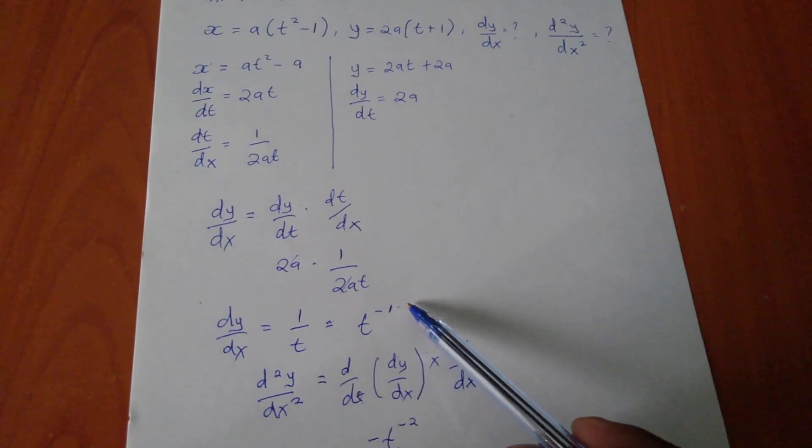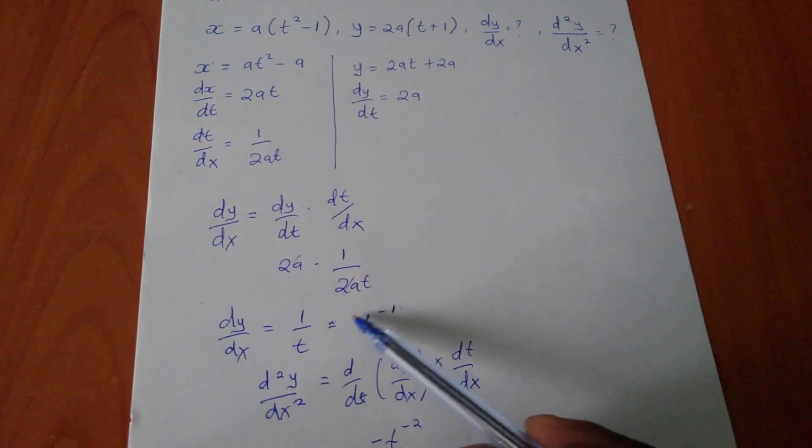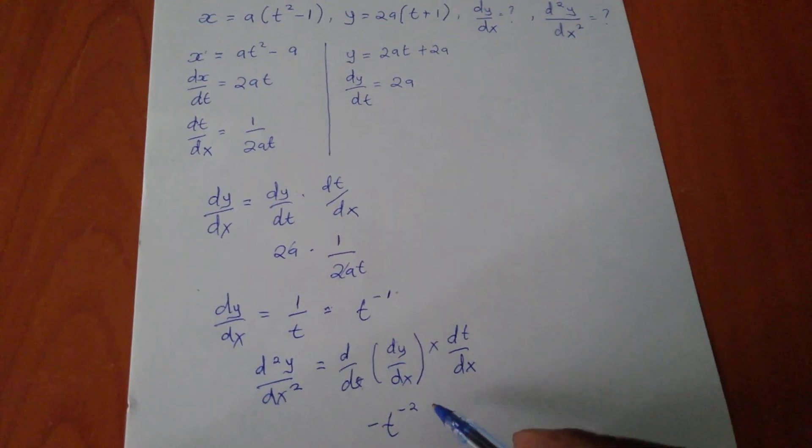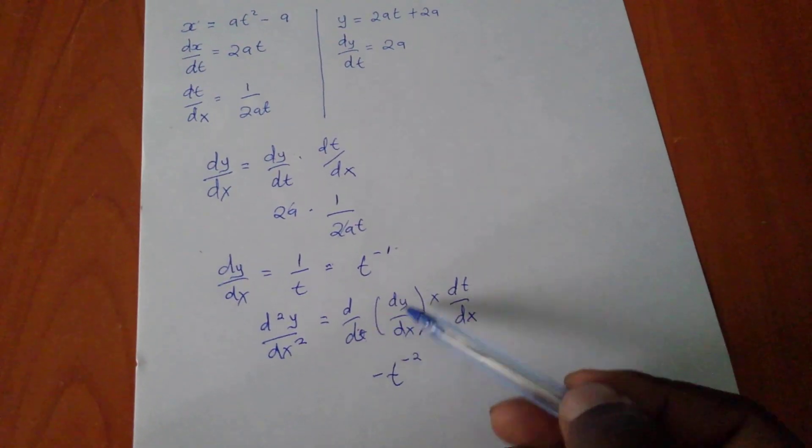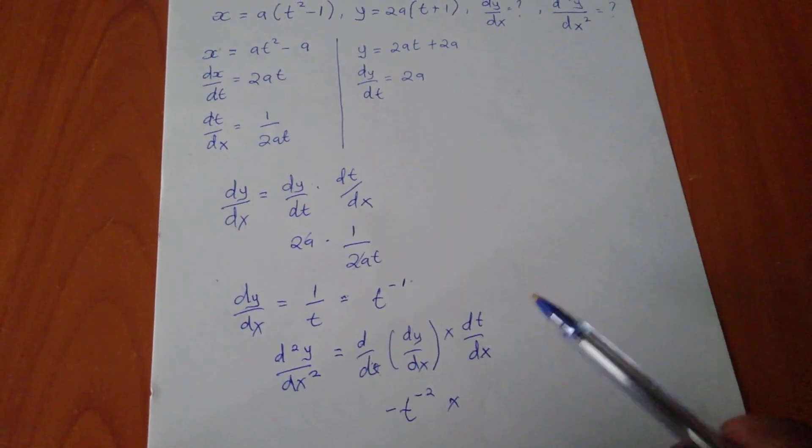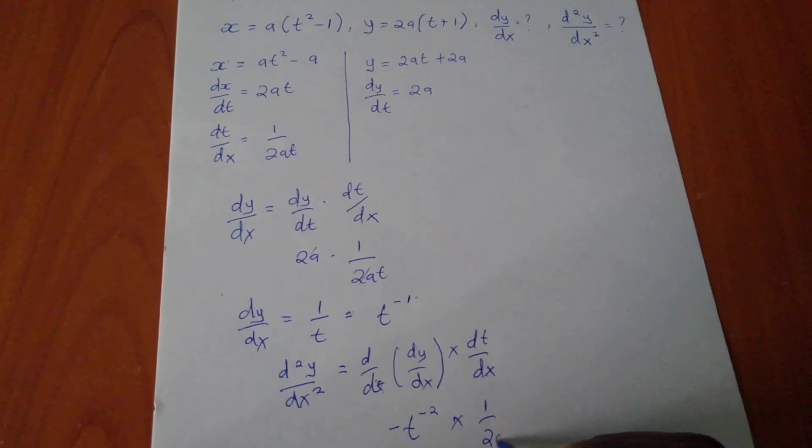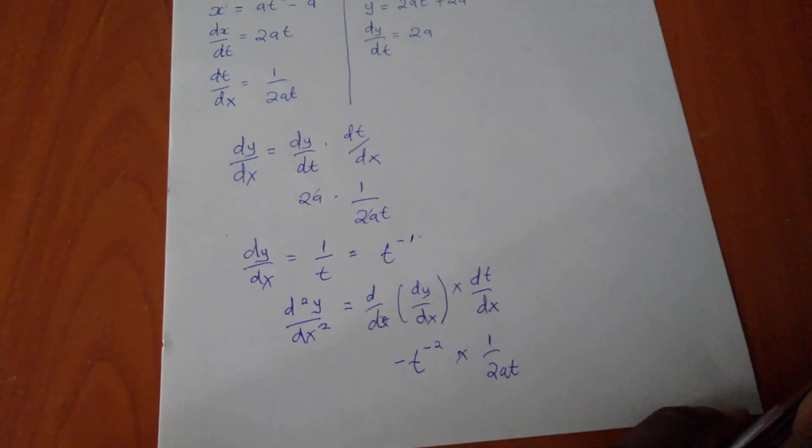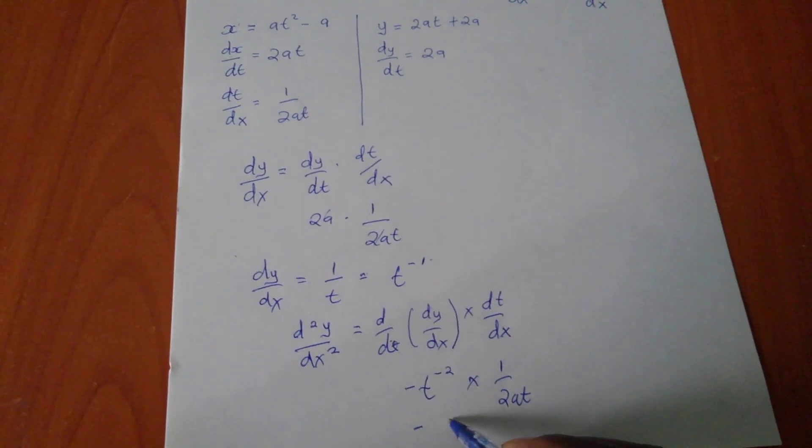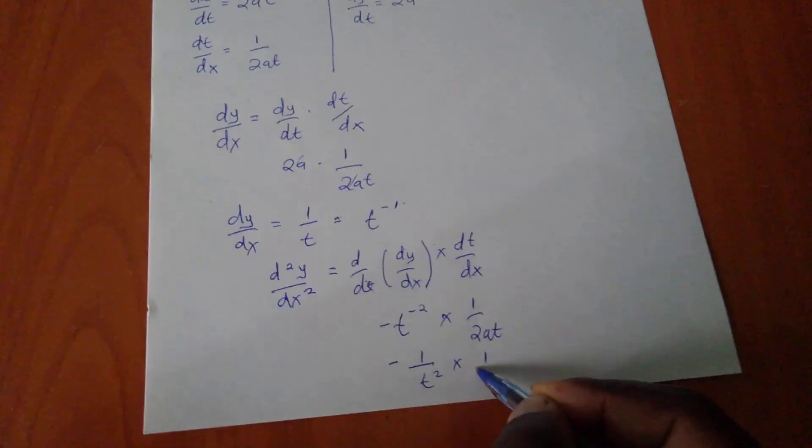Remember when you are differentiating, we subtract 1. But after bringing that negative 1, multiplying it, the power, after multiplying it, we carry its negative sign. So it will be negative t power negative 2. So differentiating this, I get this. So times dt/dx. What is my dt/dx? It's in here, which is 1 over 2at. So this one is the same as negative 1 over t² times 1 over 2at.